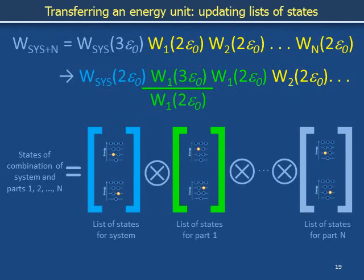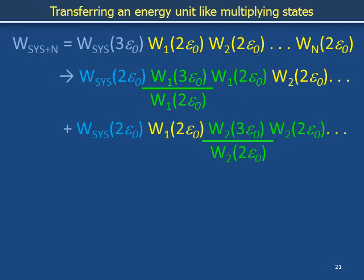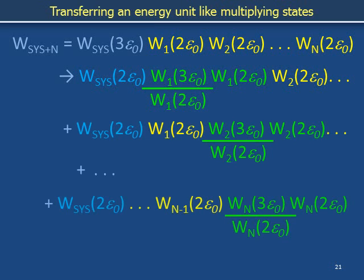Dividing and multiplying by the same factor w₁ at 2ε₀ does nothing. Part 1 is only one example of a destination to which we can add energy. We can remove a unit of energy from part 1 and stuff it into any one of the various other parts of the bath — for example into part 2, or part 3, or part 4, and so forth, or into the last, so-called nth part.